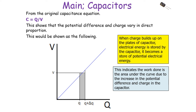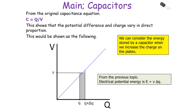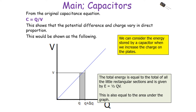The work done is the area under the curve due to the increase in potential and charge on the capacitor. We can derive an equation for the energy stored by considering the energy transferred during a small shaded section of the graph, where charge changes from Q to Q plus delta Q when an average potential difference V is applied. From our previous topic, electrical potential energy E equals potential difference times change in charge. The total energy is therefore the sum of all the small rectangular sections — the area under the graph — giving E equals one half QV.